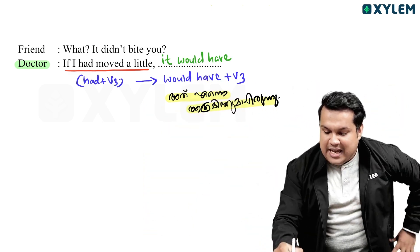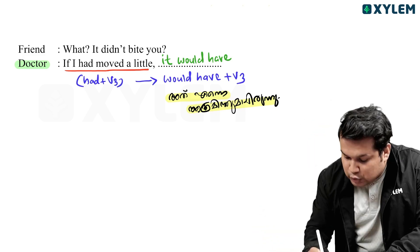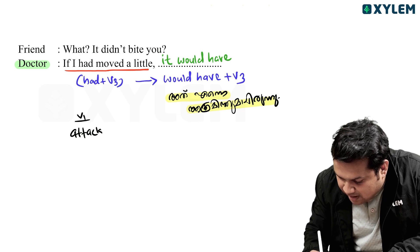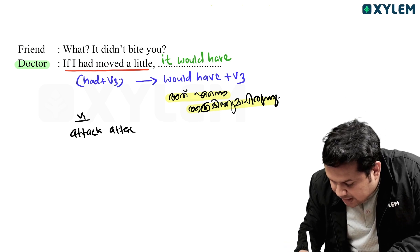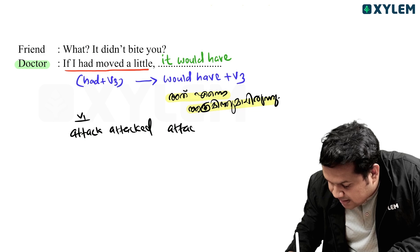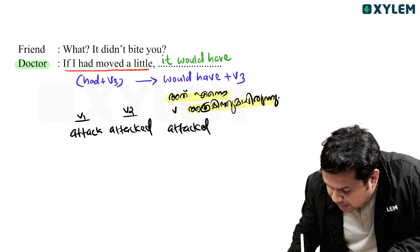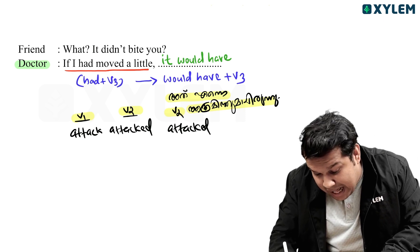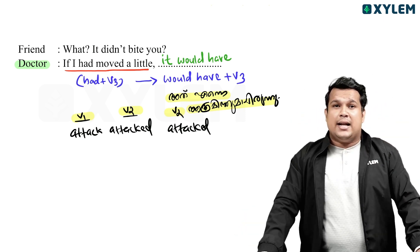Now look — here is an example. The verb is 'attack.' V1 is 'attack,' V2 is 'attacked,' V3 is 'attacked.' So V1, V2, V3: attack, attacked, attacked. So the answer here would be 'attacked' — and that will give a complete sentence.